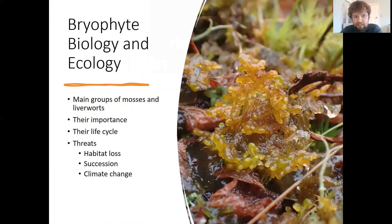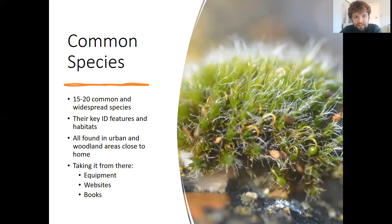In terms of bryophyte biology and ecology, we'll look at the main groups of mosses and liverworts and how to separate them. We'll look in more detail at the importance of mosses and liverworts in terms of the key part they play in habitats. We'll look at their complicated and fascinating lifestyle, which is really unique, and also at the threats that face bryophytes — from habitat loss to succession, and the emerging threat of climate change which will affect many of our bryophytes. We'll look at 15 to 20 common and widespread species, examining the ID features you need to identify them and the habitats they're found in, enabling you to go out and practice looking for these species around you. All of these species can be found in urban and woodland areas, which means you don't have to go far to look for them.